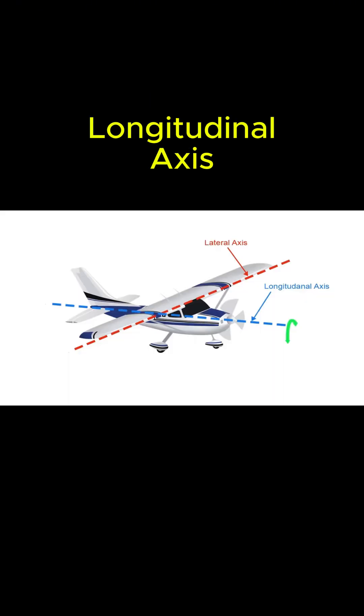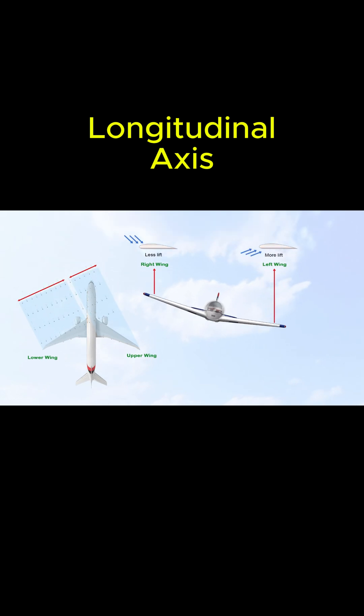This axis runs nose to tail. Rotation here is called roll, controlled by the ailerons.